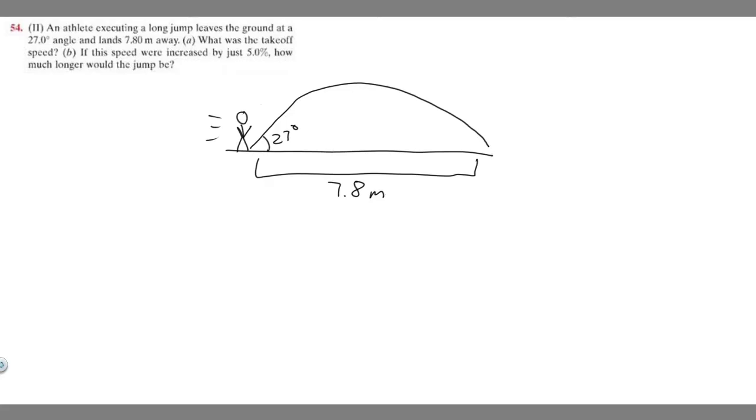So I drew a diagram of what's going on here. We have our athlete, and they're jumping at a 27 degree angle. They jump like this and we know they land 7.8 meters away.